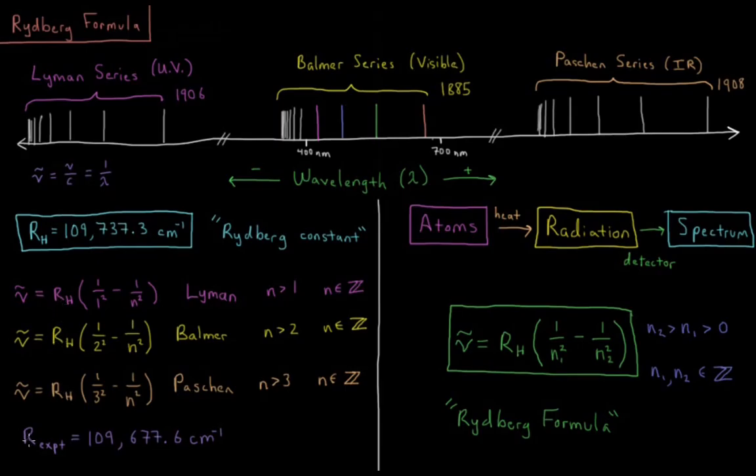Experimentally, this constant in wave numbers comes out to be 109,677.6 inverse centimeters. Wave numbers, or nu bar, is equal to the frequency of the light divided by the speed of light, which is also equal to 1 over the wavelength of the light.